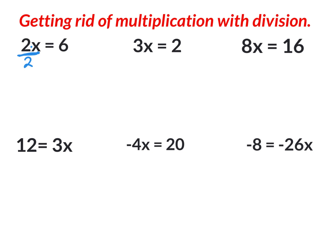Put a division bar and put the two down here, and what you do to one side you must do to the other — divide by two. Those cancel out. On the right side I have six divided by two, that's three. On the left side the twos cancel out so x is the only thing left. I have accomplished my goal of getting x by itself: x equals three. We already knew that because two times three equals six.